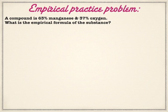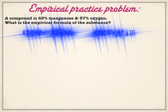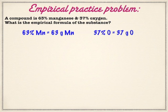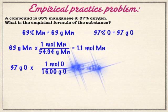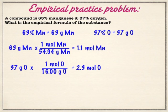Let's say something is 63% manganese and 37% oxygen. What's the empirical formula? The way I would start is take those percents and convert them straight over to grams — just change the unit from percent to grams. Then we can take those grams and divide each of them by the molar masses. We're going to take the grams and go back to moles, dividing by the molar mass off the periodic table. We get a mole ratio of 1.1 moles of manganese to 2.3 moles of oxygen. One common mistake is that students don't keep track of which is which element, and they end up assigning the wrong mole value to the wrong element — that would be a big mistake.